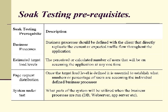SOAK testing prerequisites include: Business Processes — defined with the client to directly replicate the current or expected traffic flow throughout the application; Estimated Target Load Levels — the perceived or calculated number of users accessing the application at any one time; Page Request Distribution — once the target load level is defined, it is essential to establish what number or percentage of users are accessing each defined business process; and System Under Test — what parts of the system will be utilized when business processes are run, such as DB, Web Servers, Application Servers, etc.